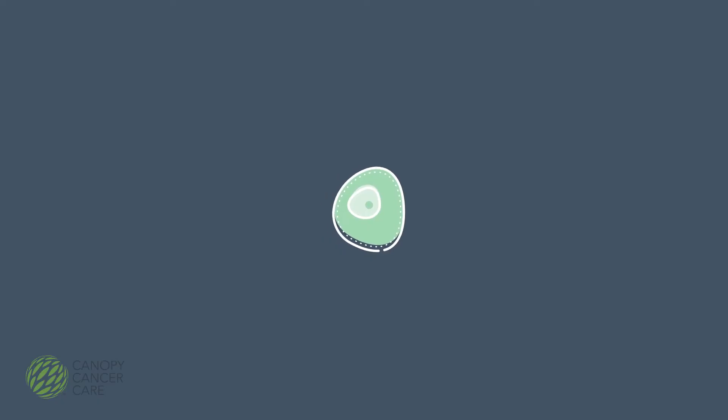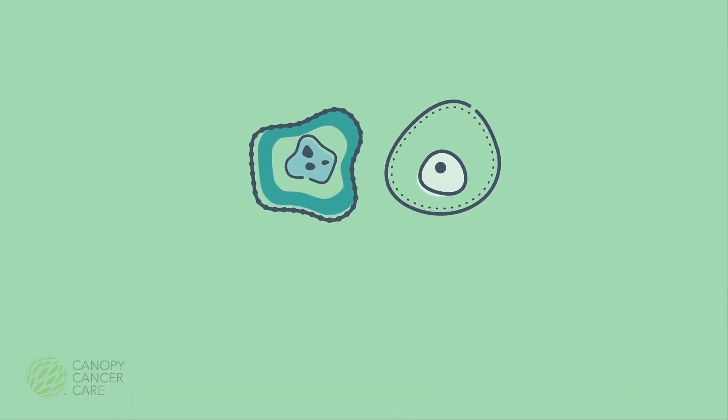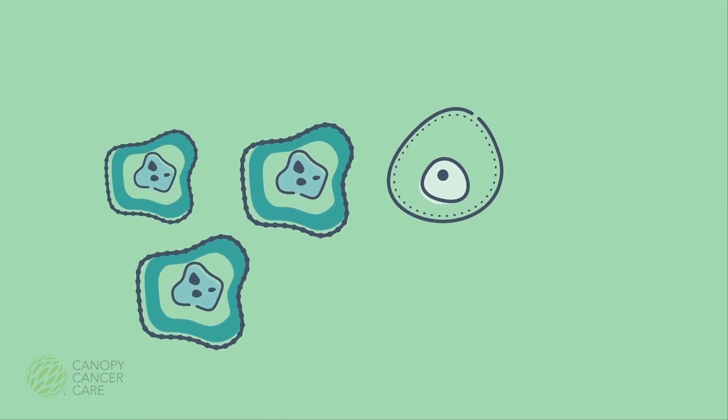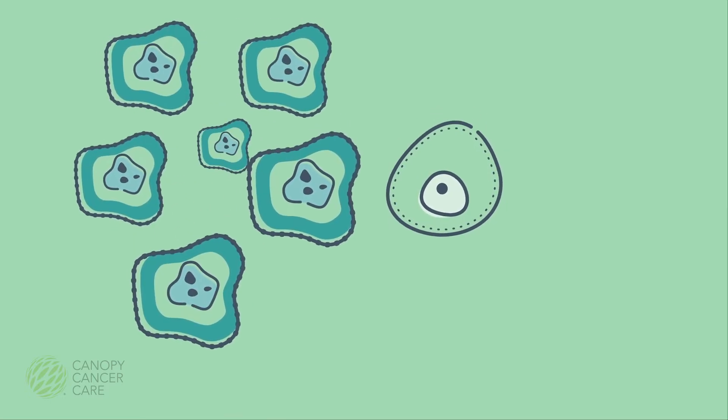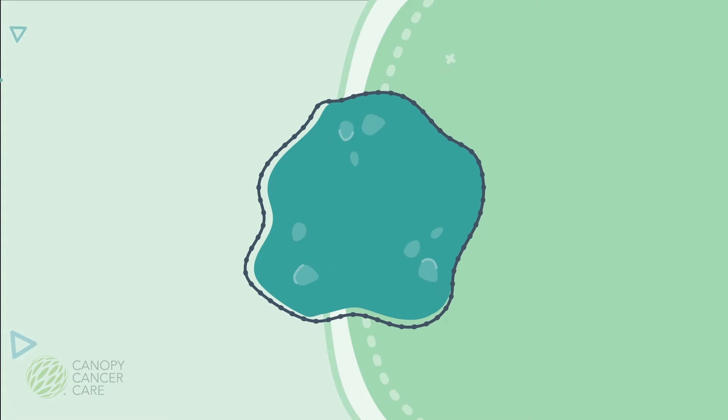While healthy cells are trained to listen to signals for when to grow, divide and die, the cells with mutated DNA sometimes ignore your body's signals. These rogue cells continue to divide unchecked. This is how cancer starts.